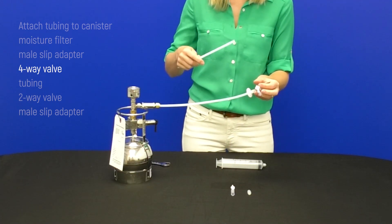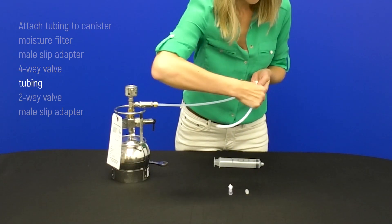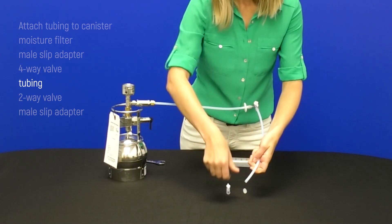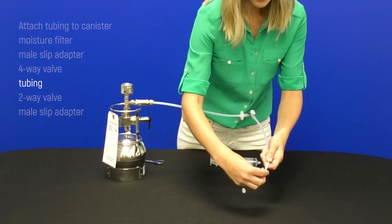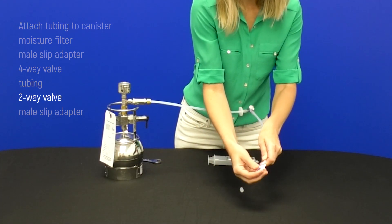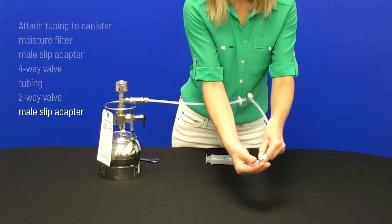And from there, you can attach a piece of tubing down to your sampling point. And then the two-way valve at the bottom and the final slip adapter to connect down to your sampling point.